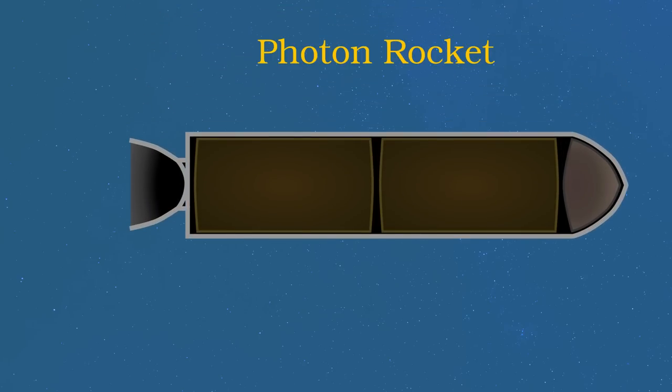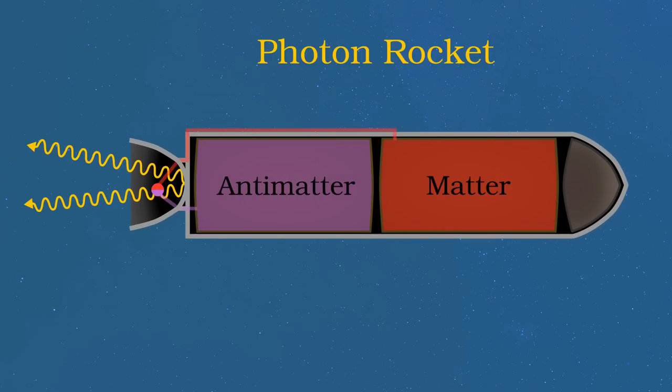Another possibility is called a photon rocket, where matter and antimatter annihilate to produce gamma rays. It is then those gamma rays moving at the speed of light, which fire out of the back of the spaceship to propel it forward.